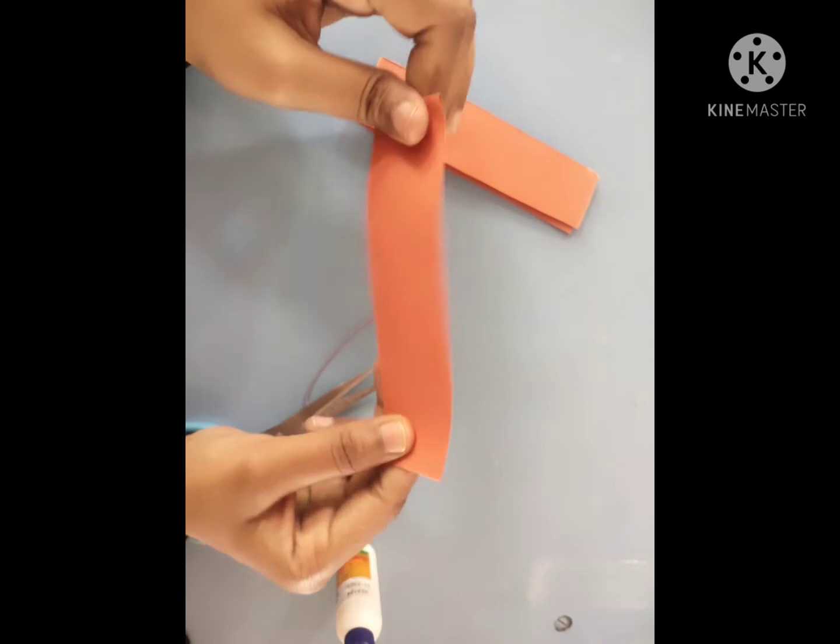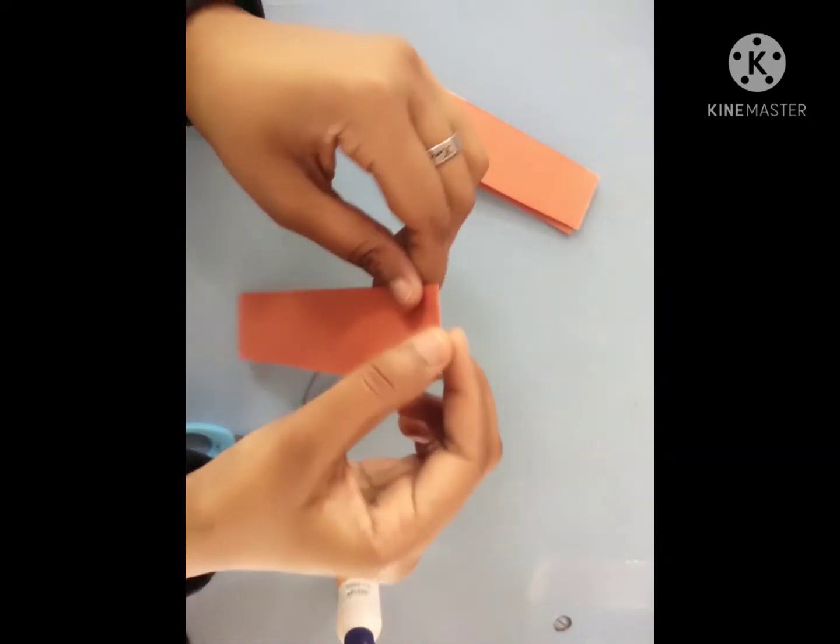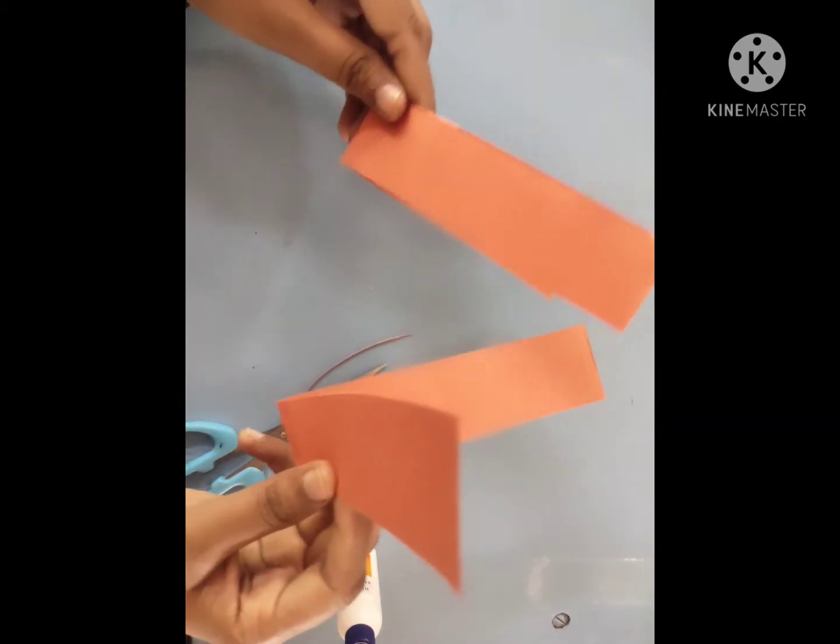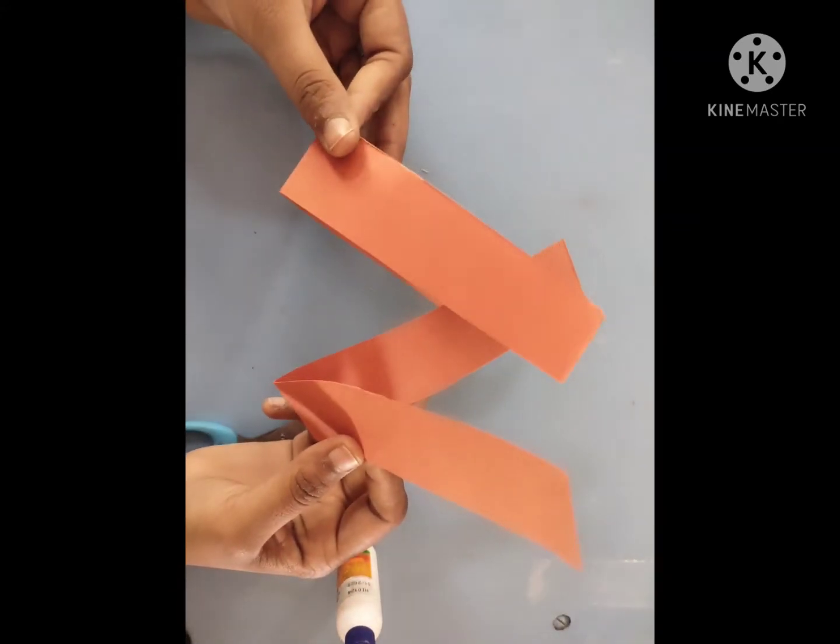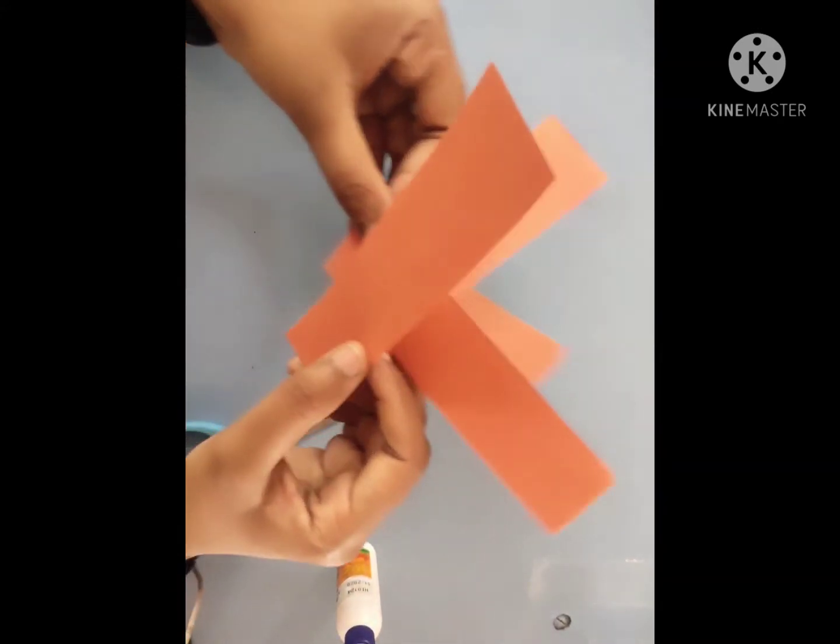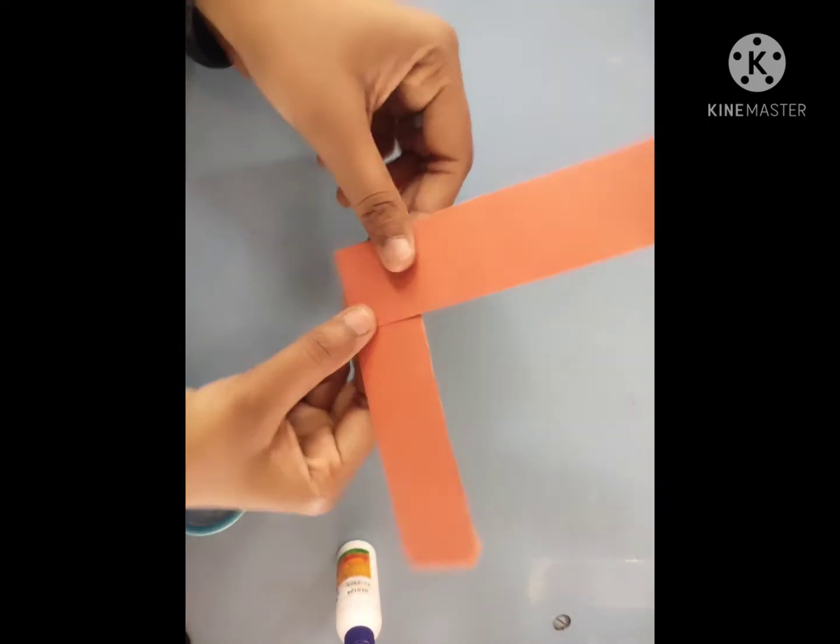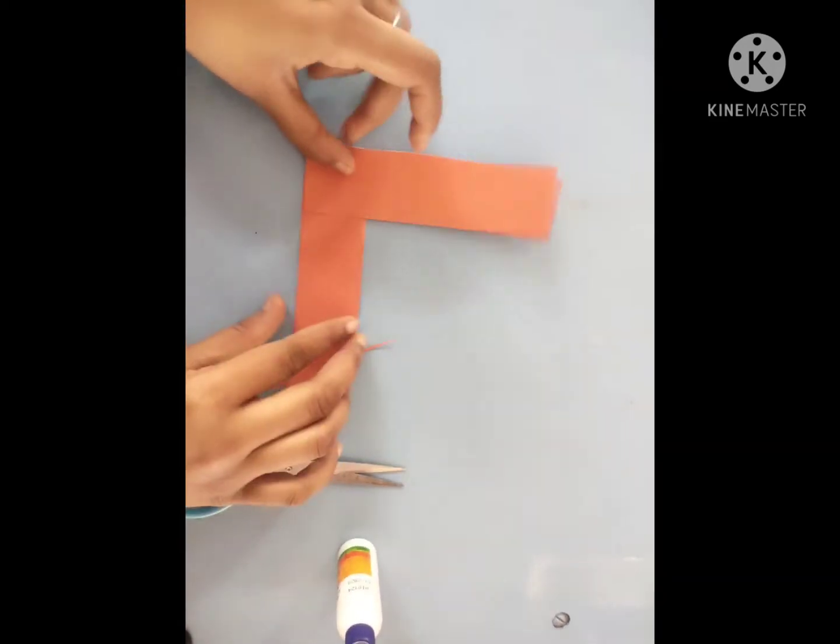Push it properly so that it makes a crease here. Now all you have to do is put one strip in another like this and just pull it. When we pull it, we will see that it is making an L-type shape.